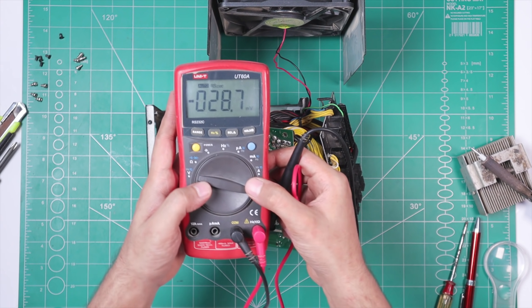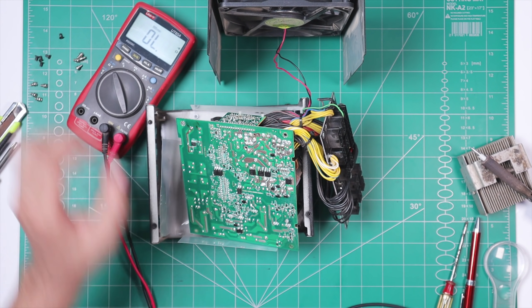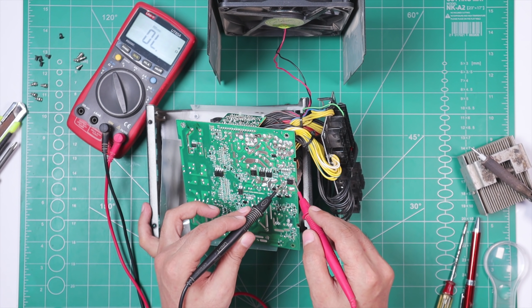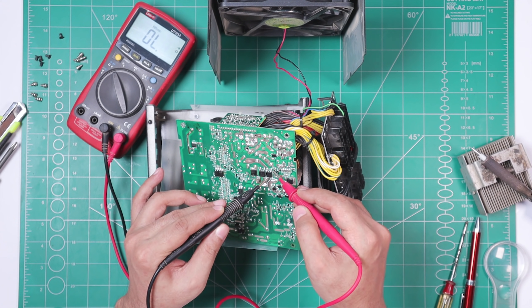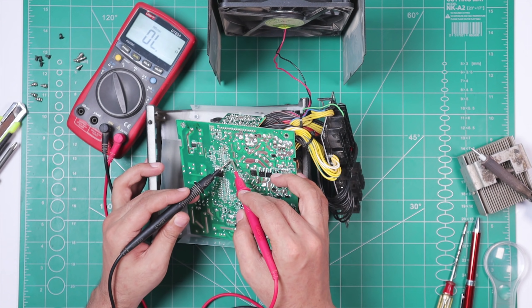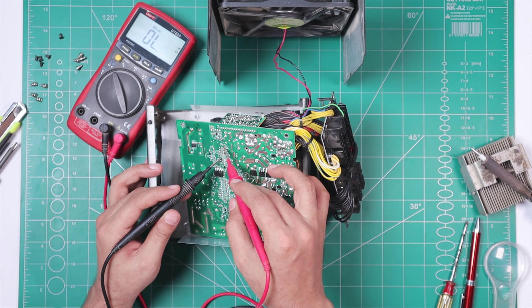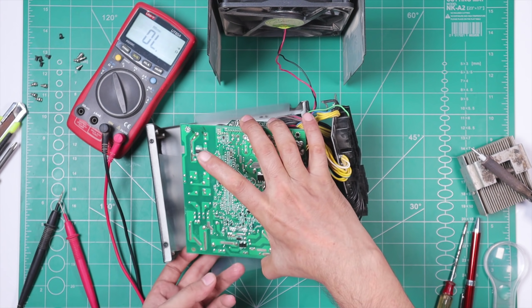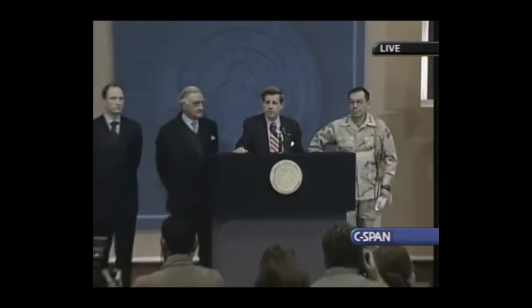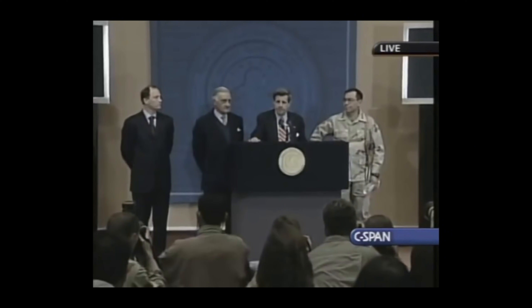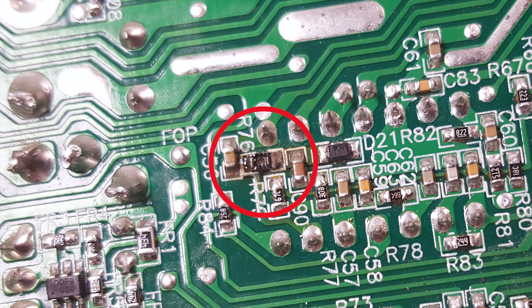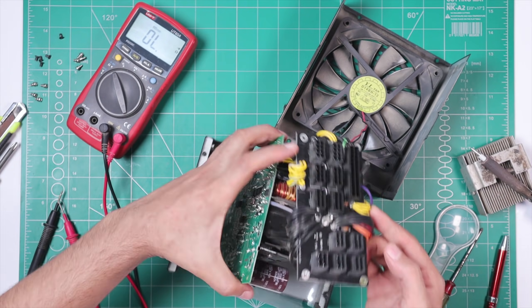Alright, so now I have set my multimeter on continuity mode and I'm just checking for any short MOSFETs or capacitors. Well, nothing seems to be short here, everything looks just fine. Whoa, wait a minute. What do we have here? It's actually a blown up 10 ohm resistor. Let's see where it's connected to.